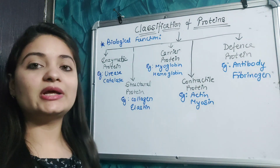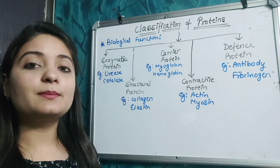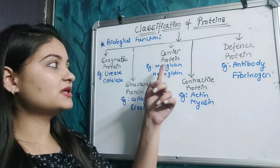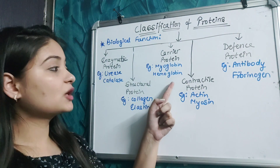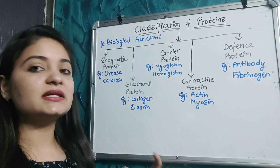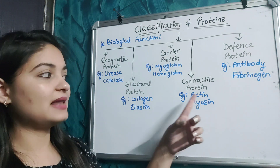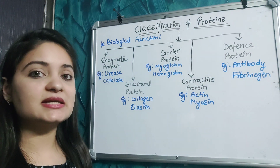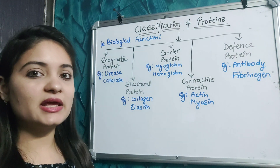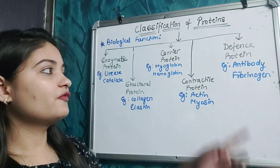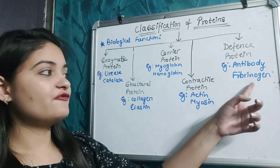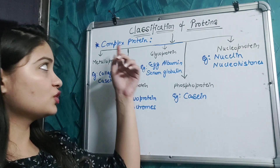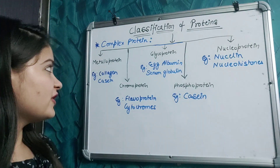Carrier proteins transport ions and molecules in the body, for example myoglobin. Fourth, contractile proteins help in the contraction system, for example actin and myosin. The last is the defense protein, which helps in defending against foreign organic molecules or particulate matter, for example antibody and fibrinogen.